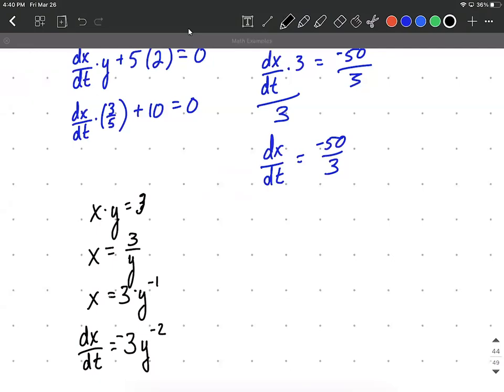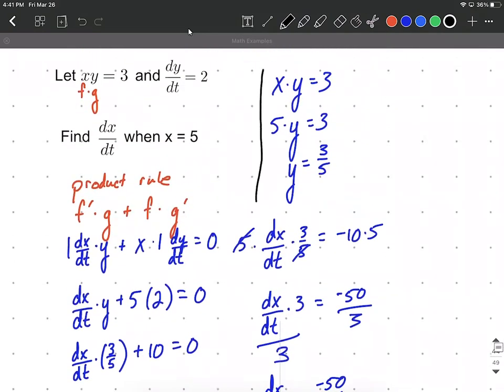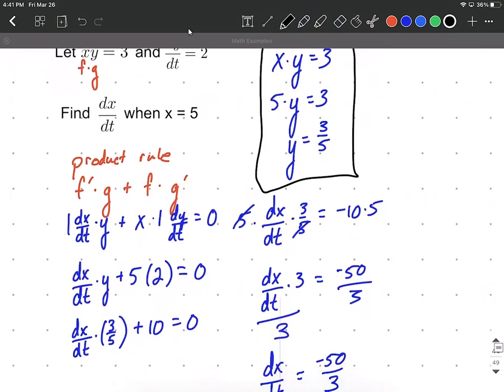Now we're still going to have to do that same work to get y. And I also need to do, this was the derivative of y with respect to t. So let's plug in the information that we found. Up here we had done the work previously to get y is equal to 3/5 when our x value is 5.